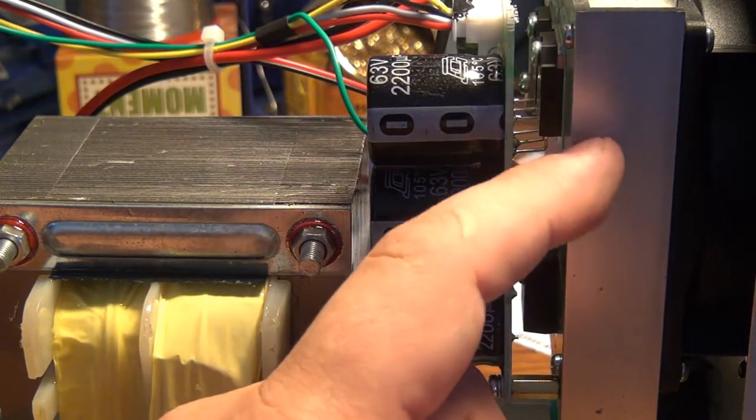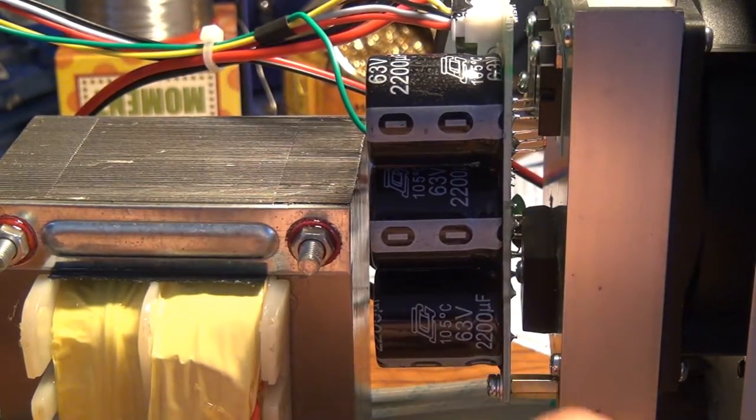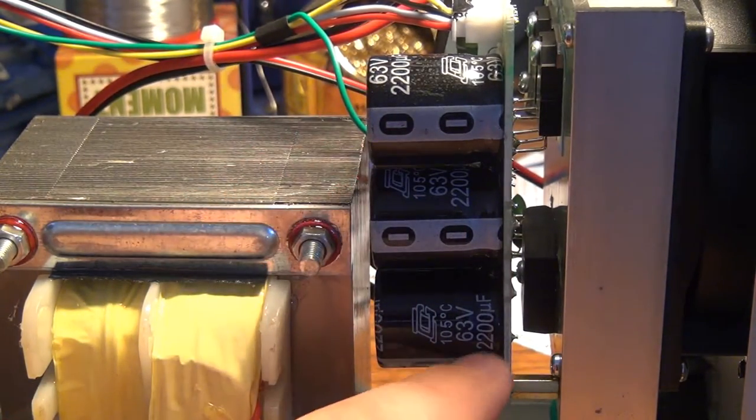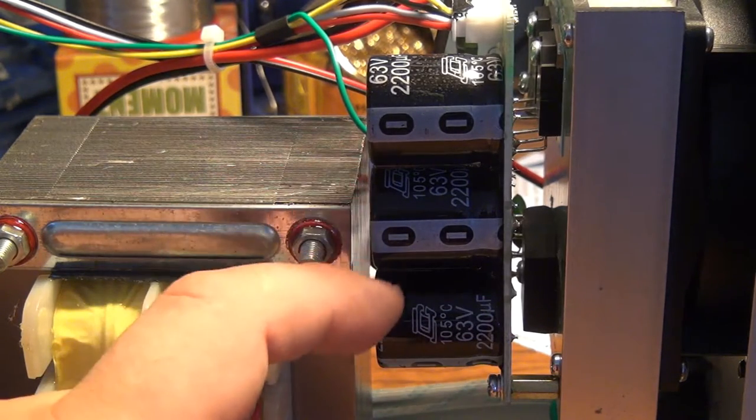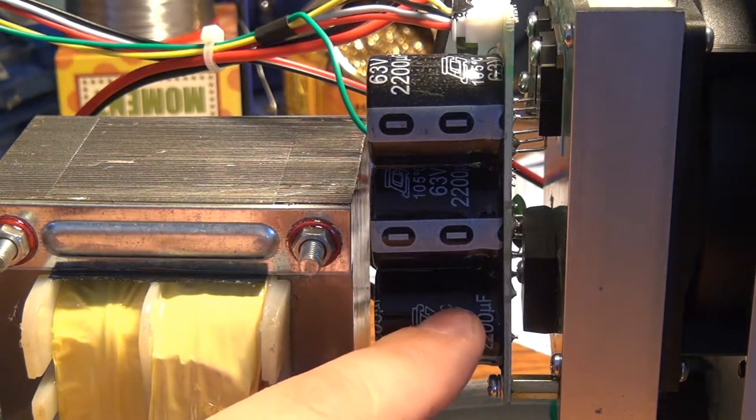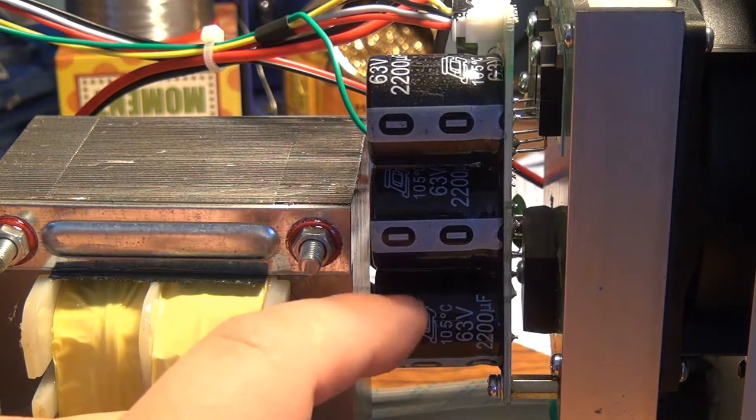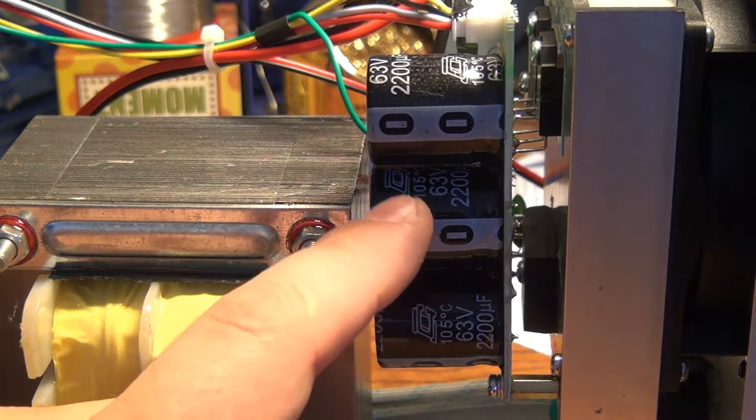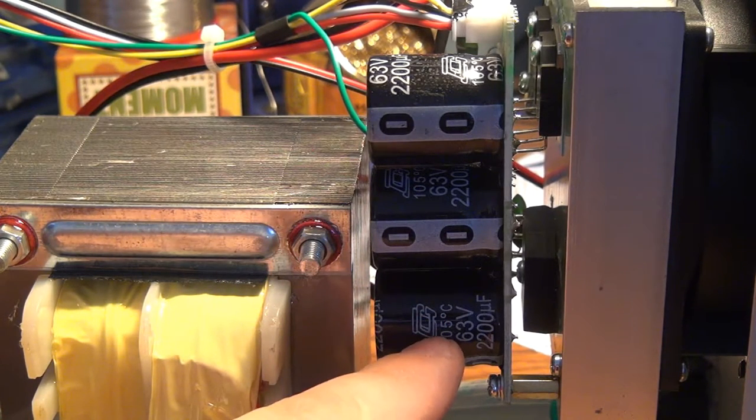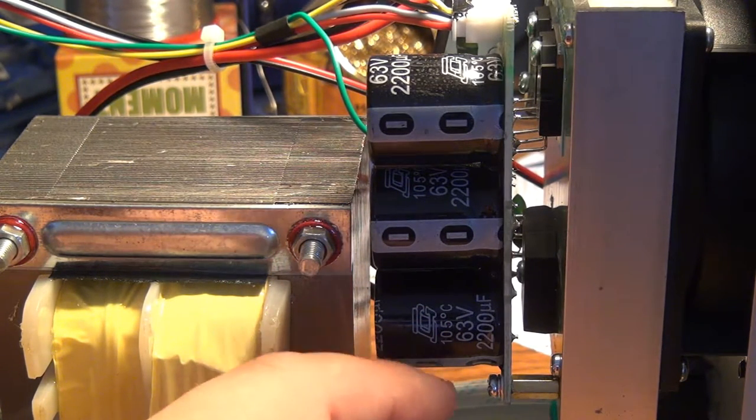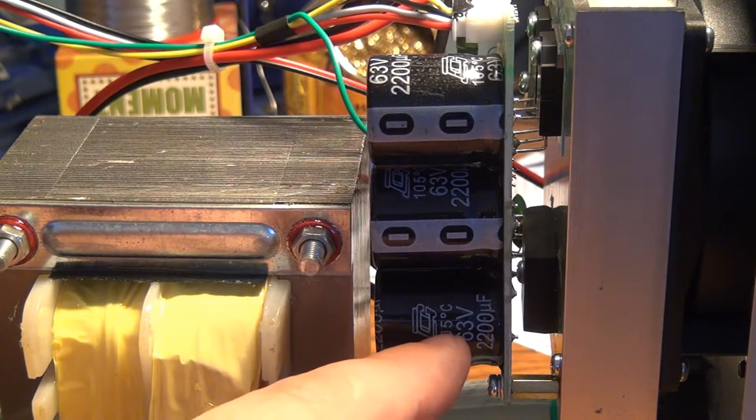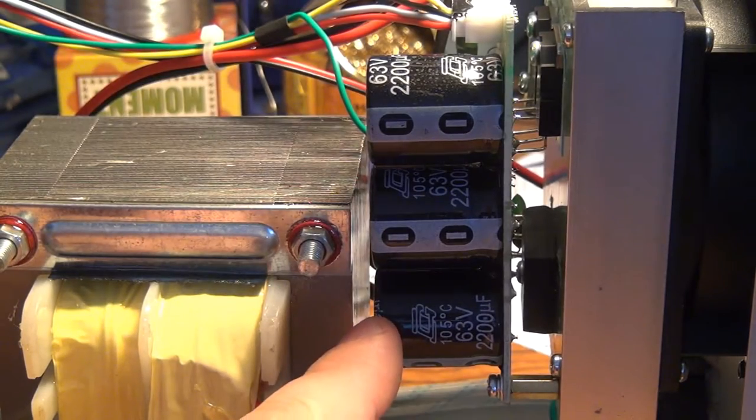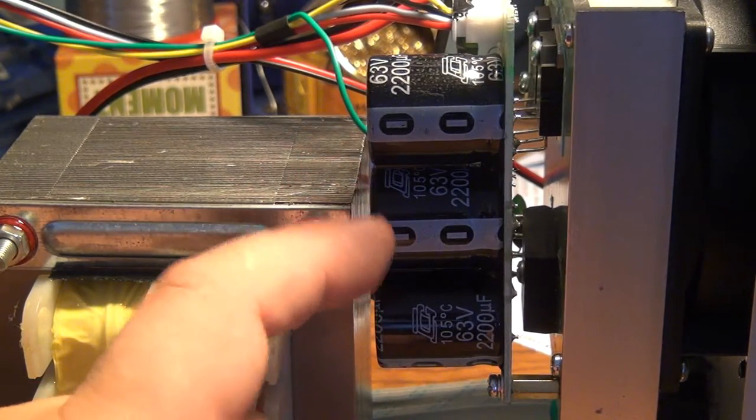Looking at the capacitors here, these are the output capacitors. They're 2200 microfarad. They're pretty beefy. They are 105 degrees C. So theoretically they're of a higher quality but I don't outright recognize the markings of the brand, the I with like a C in it. They're not the higher quality capacitors of like a Nichicon.